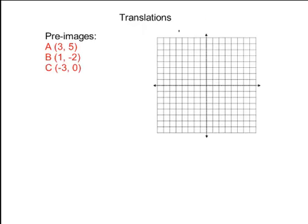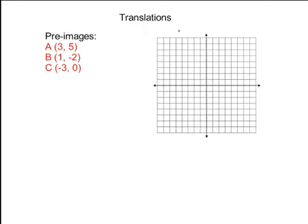You're still going to have pre-image points. You're still going to call them A or B or C, Q, whatever. We're still going to want to plot those on a coordinate plane. And we're still going to do something to this A and this B and this C to turn them into A prime and B prime and C prime.